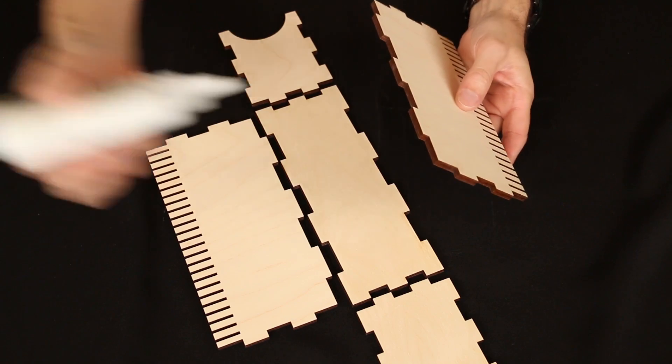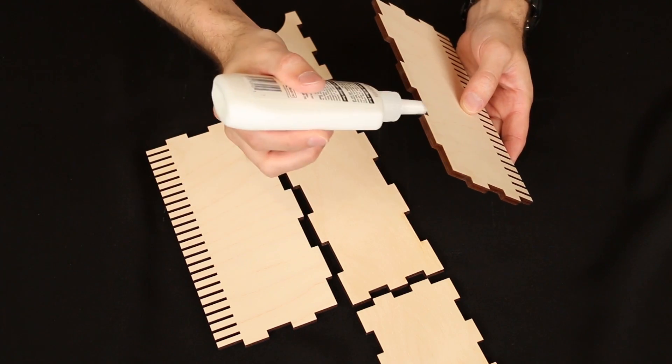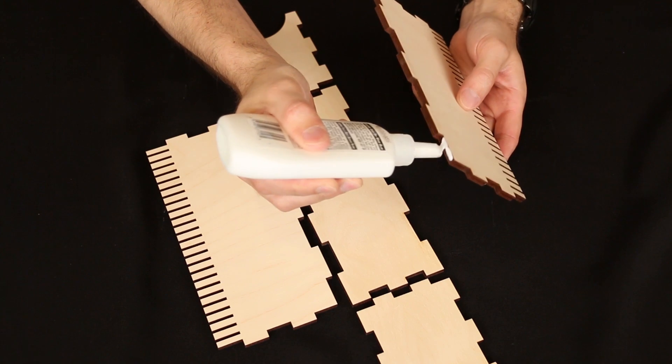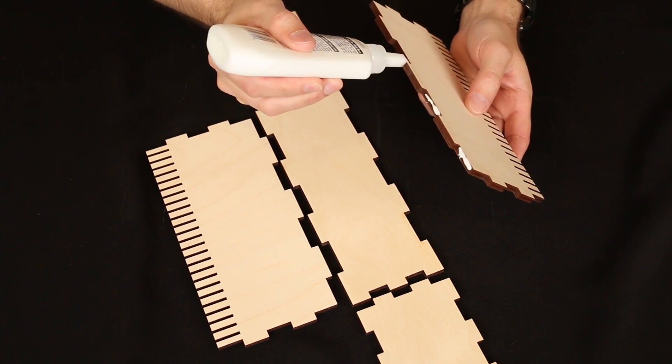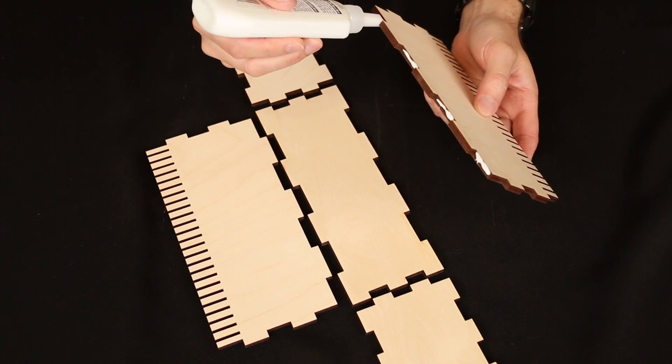What you're going to do is run glue along these inside grooves, just like this. You don't need to put a lot of glue, but you want to at least cover the surface.